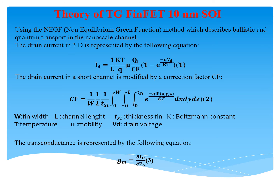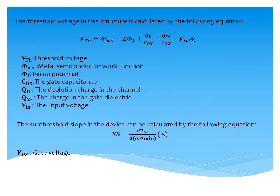The transconductance is represented by the following equation: the transconductance equals the variation of the drain current per the gate voltage. The threshold voltage in this structure is calculated by the following equation, where VTH is the threshold voltage, VMS is the metal-semiconductor work function, VF is the Fermi potential, COX is the gate capacitance, QD is the depletion charge in the channel, QSS is the charge at the gate interface, and VIN is the input voltage.